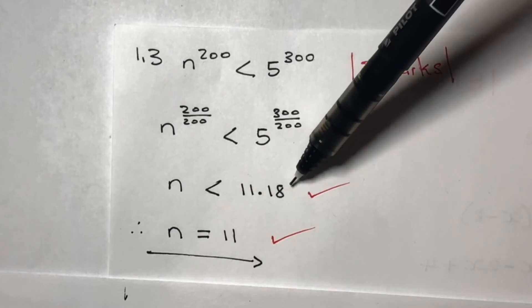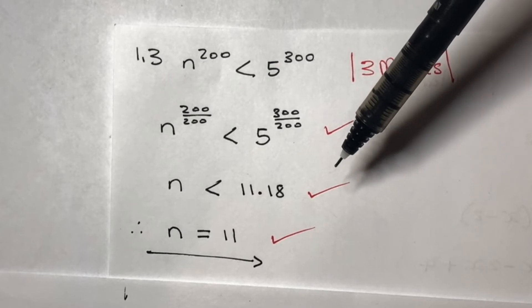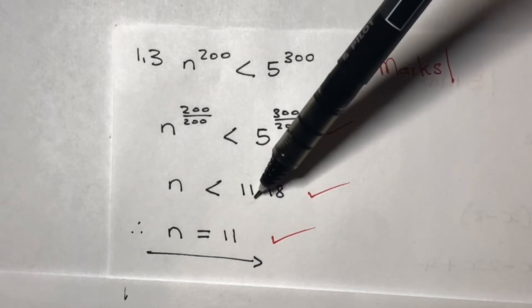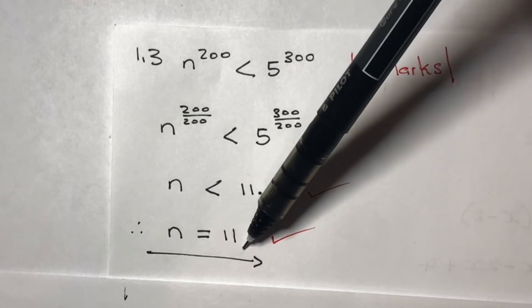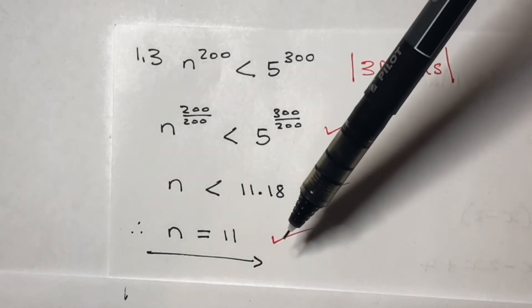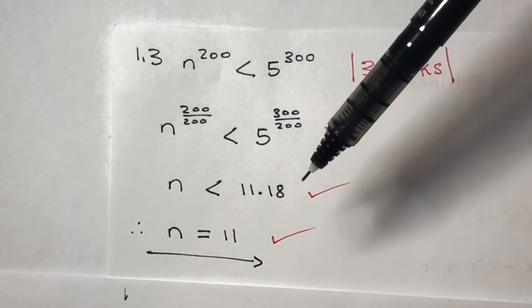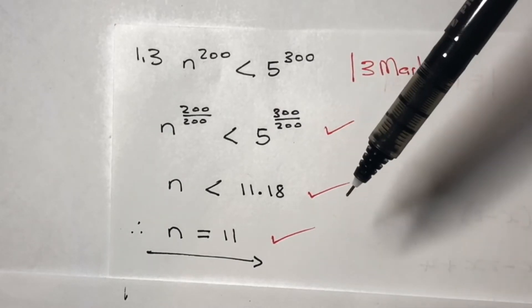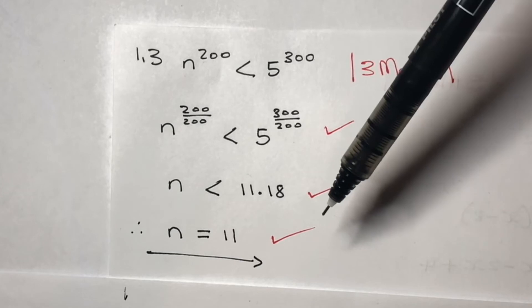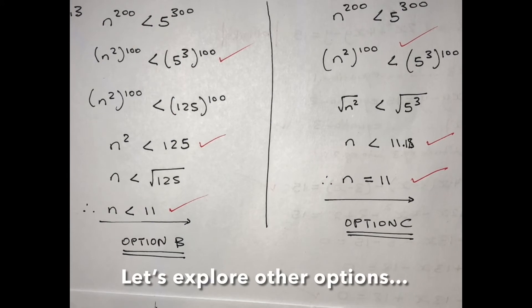By doing so, you get n is less than 11.18. Remember, the question is requesting you to write the integer, which is a whole number, so you ignore the decimal and write 11. A whole number is a number without a decimal — it could be 2, 10, 20, 50 — so in this case you ignore the decimal.